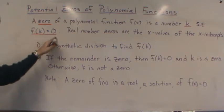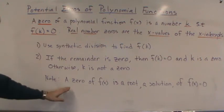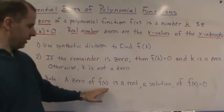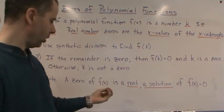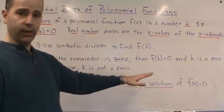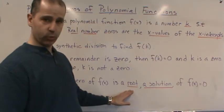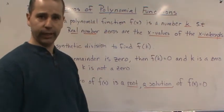To start with, we want to define what a zero is. A zero of a polynomial function is a number k such that the function evaluated at that k value gives you zero. So if you plug in a value into a function and the result at that k value is zero, then we would say that k is a zero of the function.